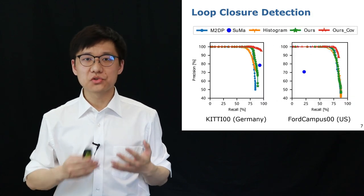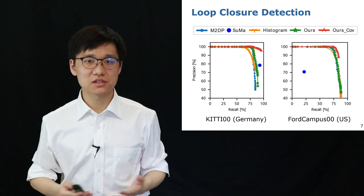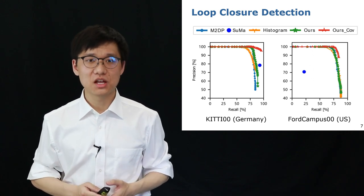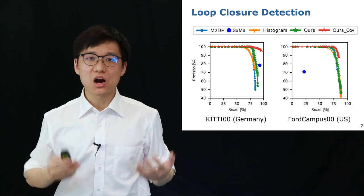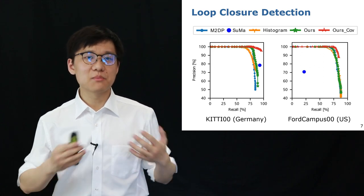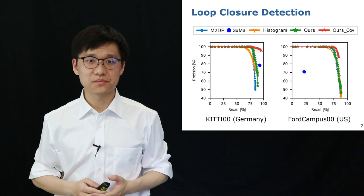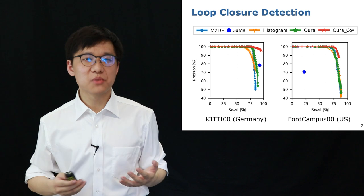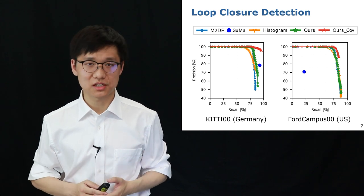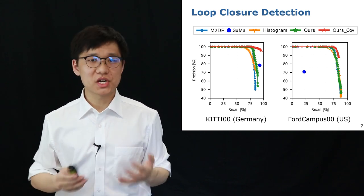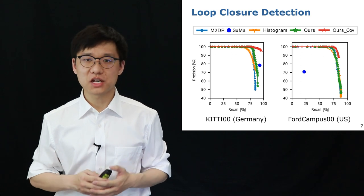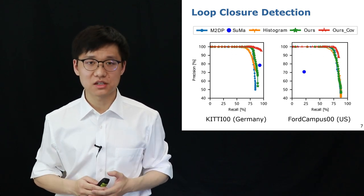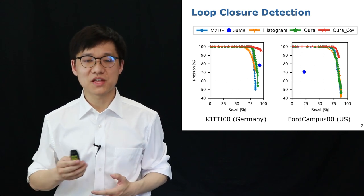Here we show the precision and recall results of our method comparing to other baselines for loop closure detection. The red line represents our overlap-based method combined with pose uncertainty. As can be seen, our method outperforms other methods on both KITTI and Ford Campus datasets. Note that we trained our method only on parts of KITTI datasets and tested it on both KITTI and Ford Campus datasets. That shows good generalization of our method.